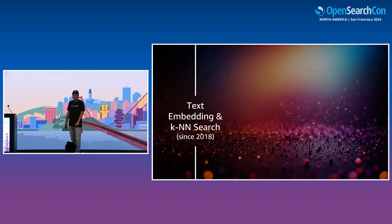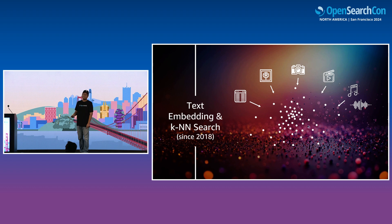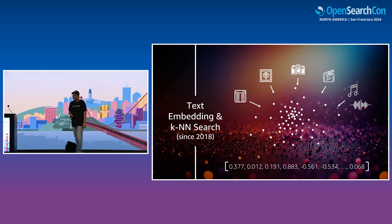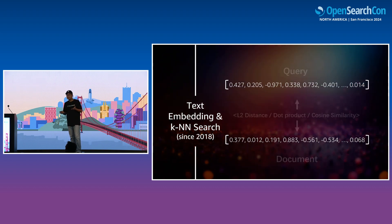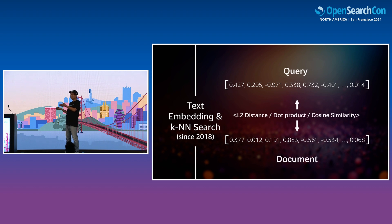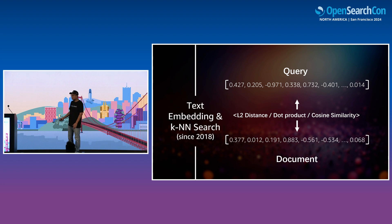After 2018, the age of text embedding arrived. With the birth of BERT model, everything can be embedded into a vector. Images, videos, music, and especially text can be embedded into a vector — typically 512 or 768 dimensions. The semantic similarity between two things — whether image or text — can be compared using vector similarity. That is purely a math problem: you can use L2 distance, dot product, or cosine similarity. So a very high-level semantic problem can be transformed into a math comparison.